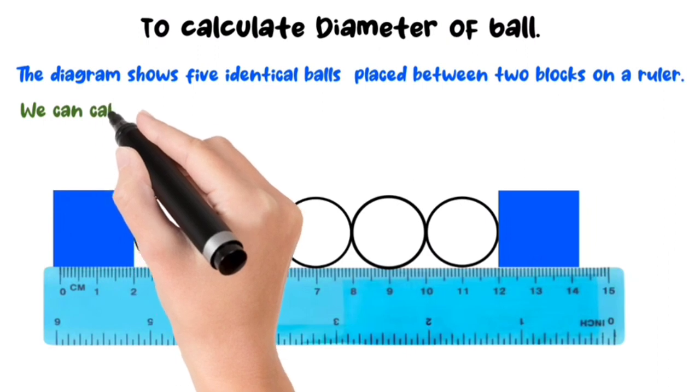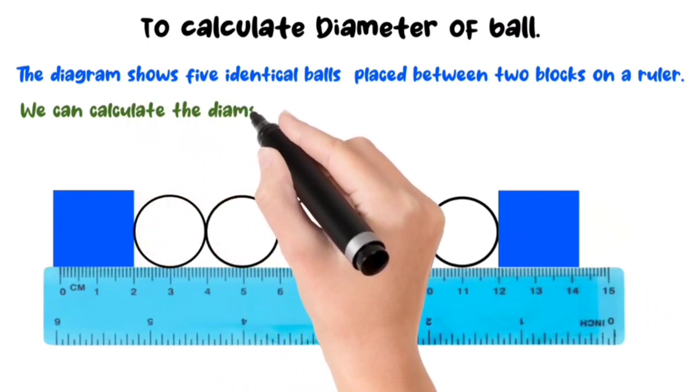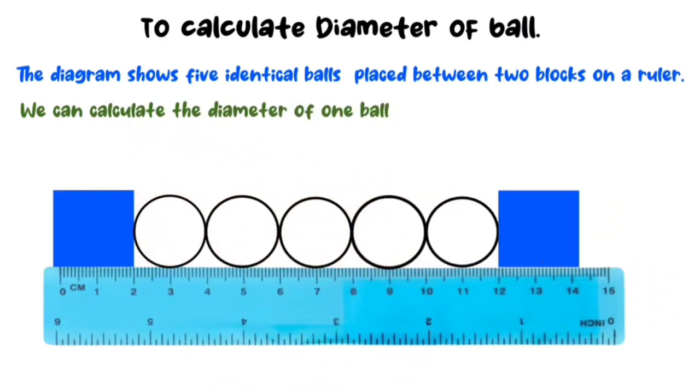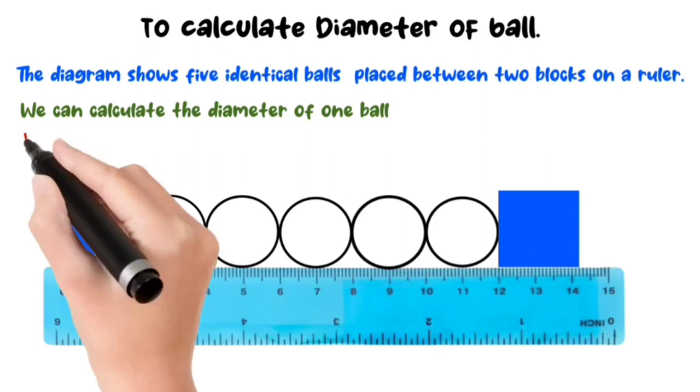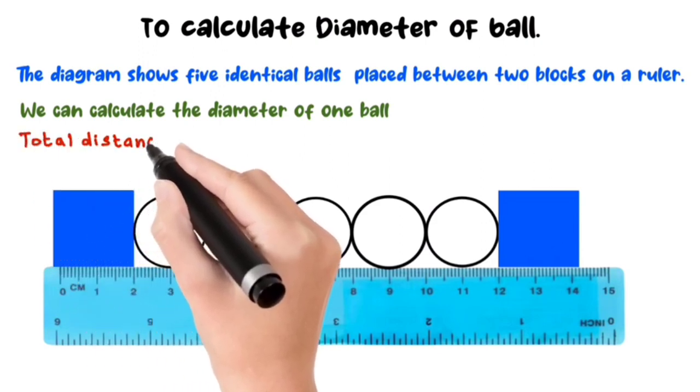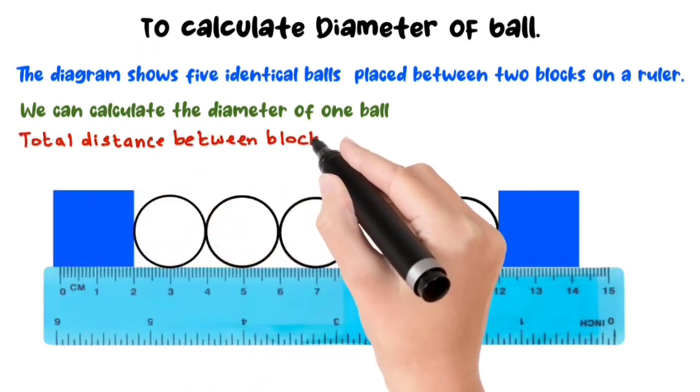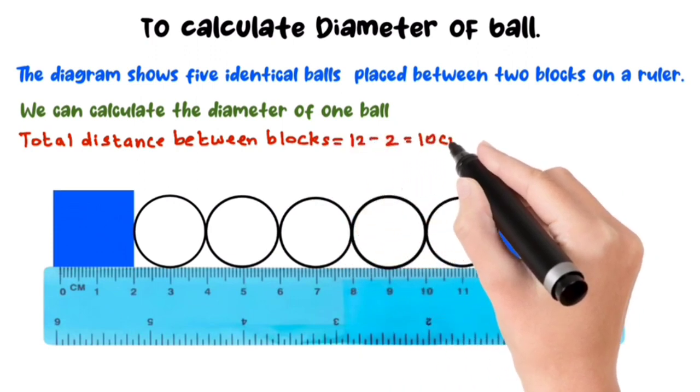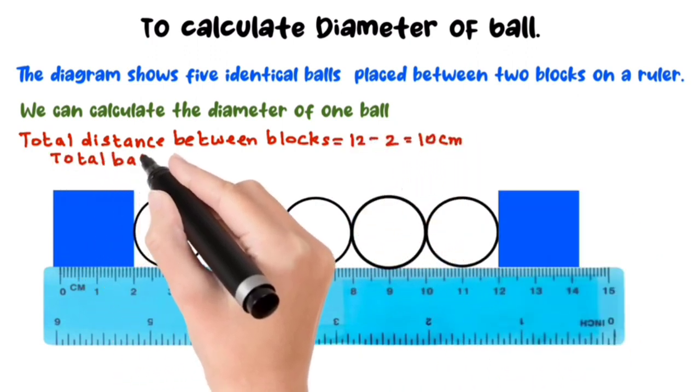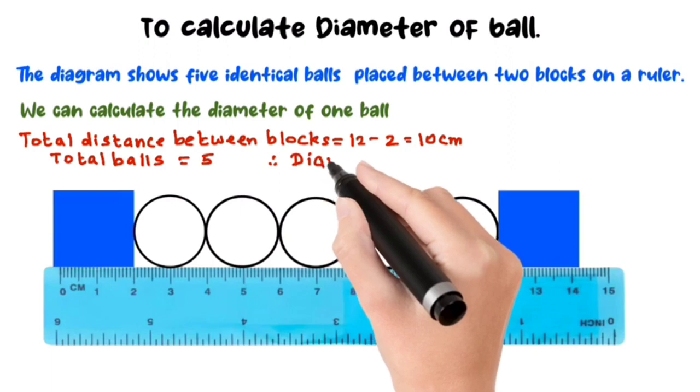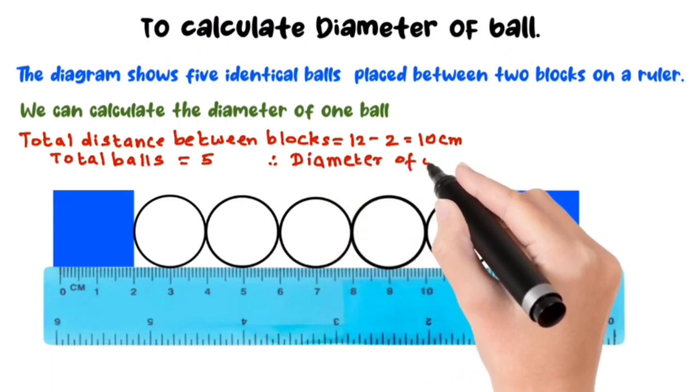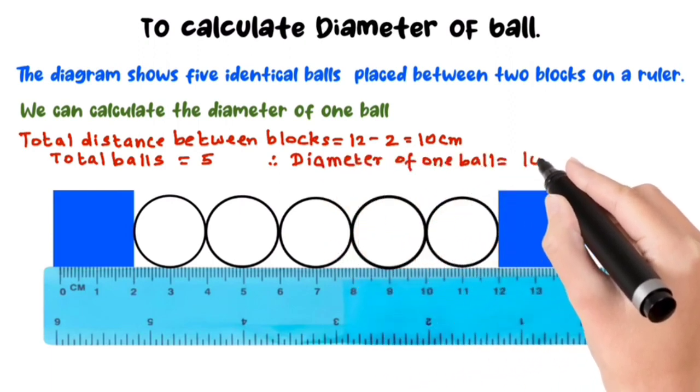Now we can calculate the diameter of one ball. The total distance between the two blocks is 12 minus 2 equals 10 centimeters. Total balls is 5. Therefore, the diameter of one ball is 10 divided by 5 equals 2 centimeters.